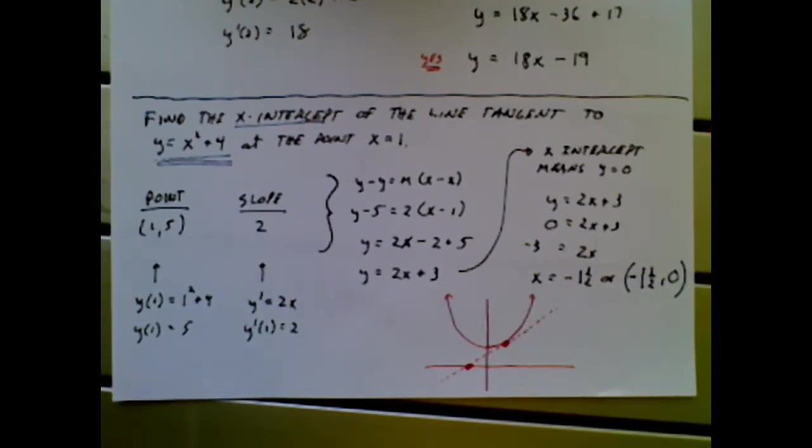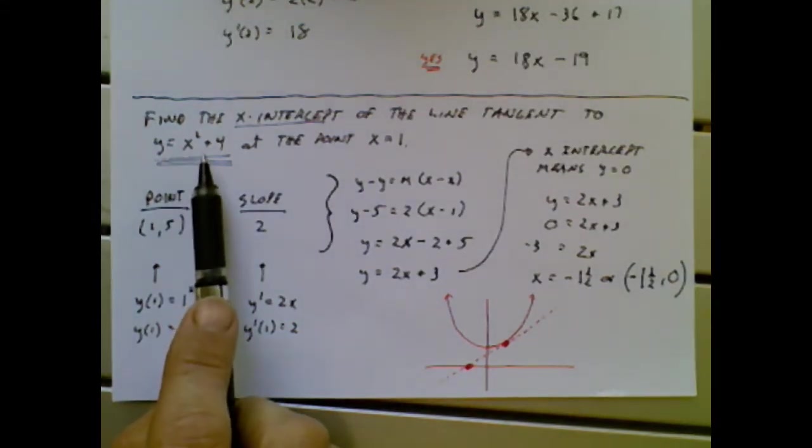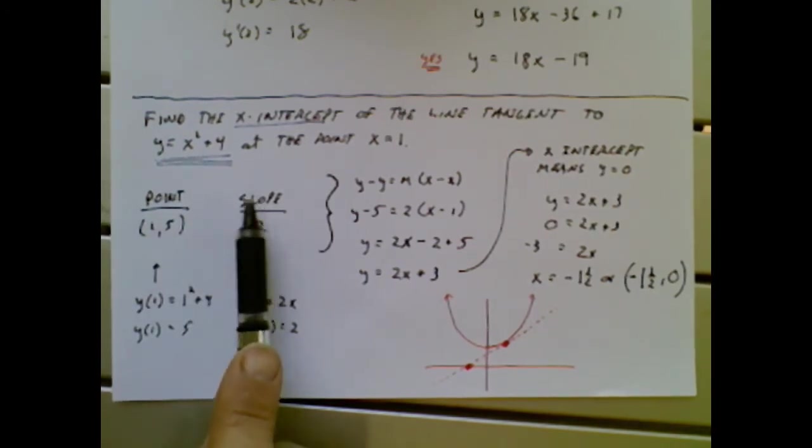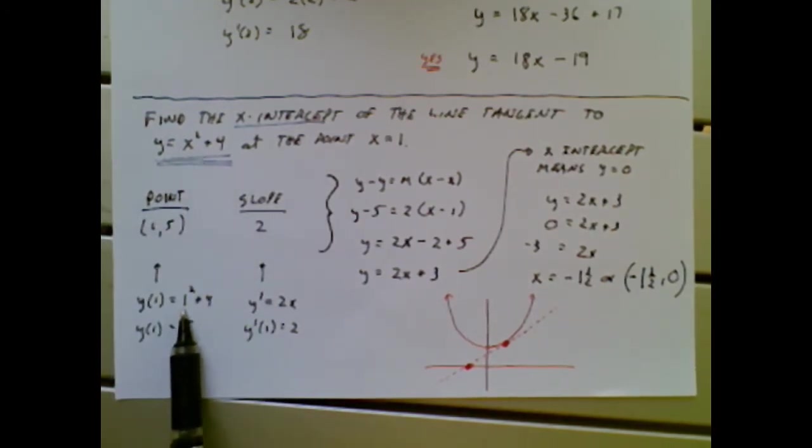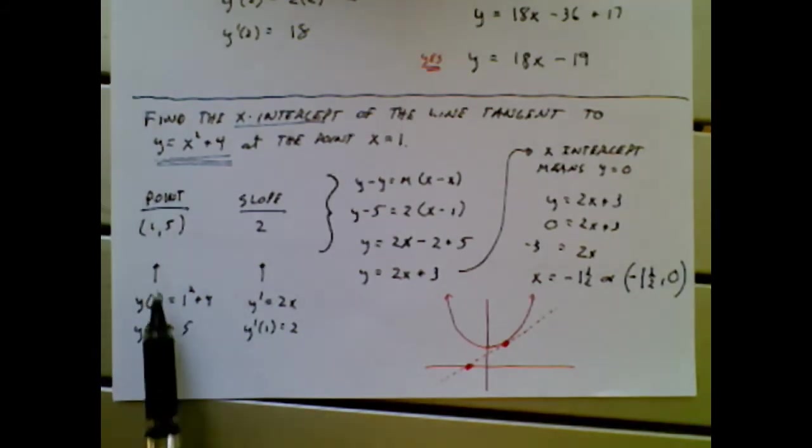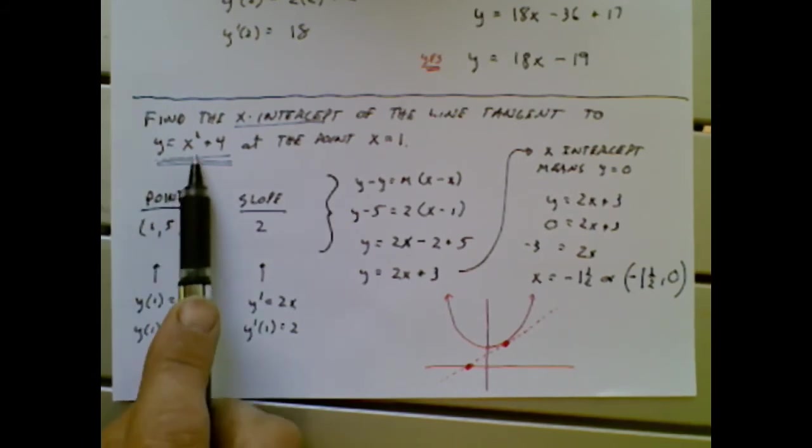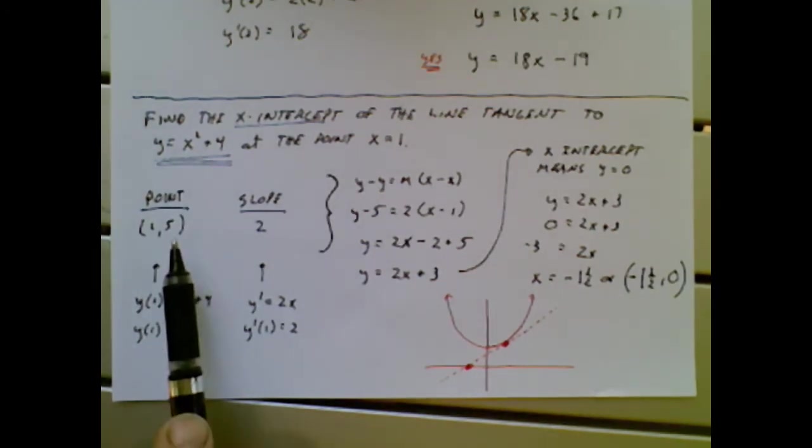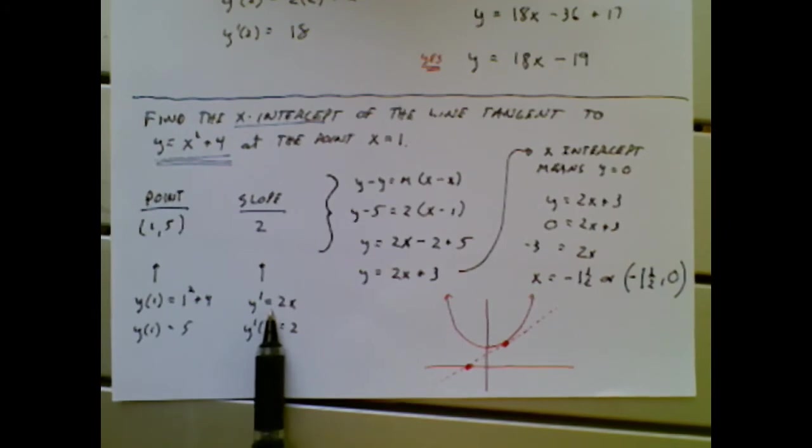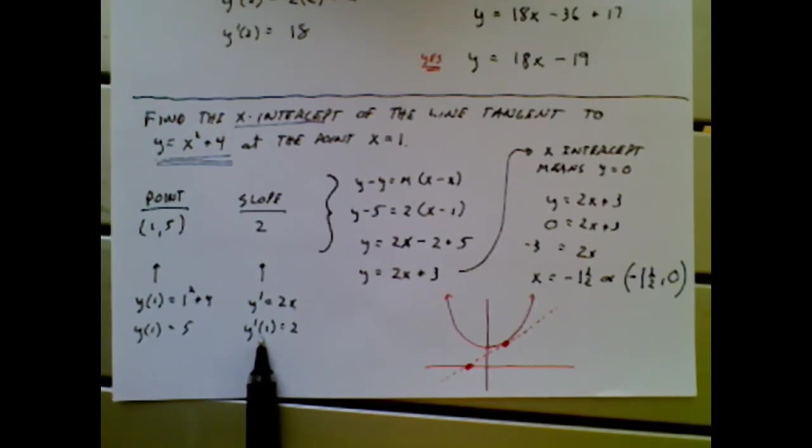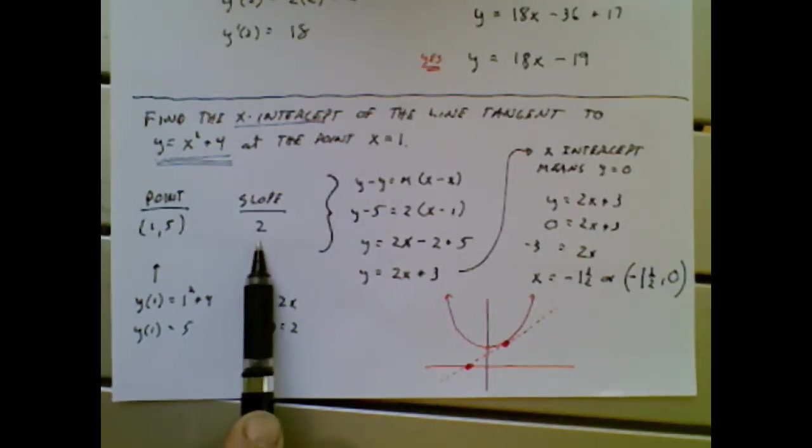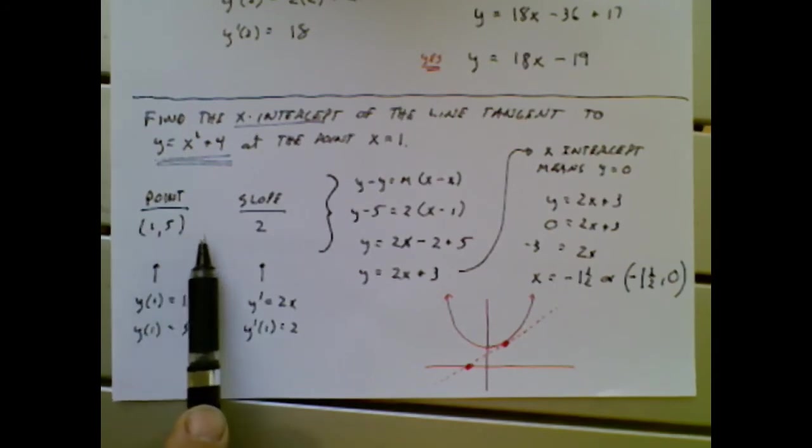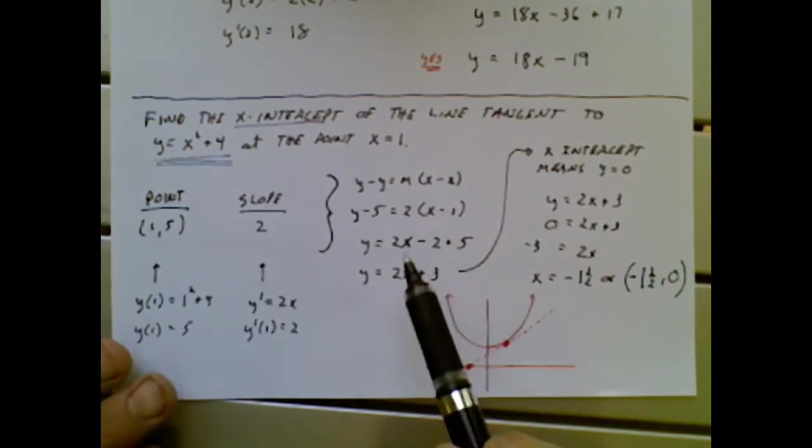Before we worry about the x intercept, let's get the tangent line. To get the tangent line for an equation, I need a point and a slope. I use this equation to plug in an x equals 1, get out a y equals 5. Now I know the point 1 comma 5 is on that equation. Now I need the slope. The slope is a calculus thing. So I need the derivative of that. It's y prime equals 2x. I need the slope at x equals 1. So now I need y prime of 1. That means I have to plug in a 1 and get out a slope of 2. Algebra or pre-algebra right here. Calculus right here.